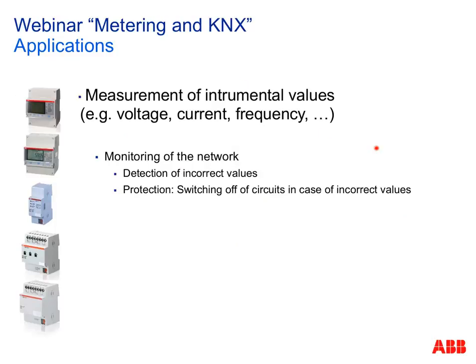When measuring electrical values we also get classical values like voltage, current, and frequency, which can be used for monitoring your power network. You can detect incorrect values — for example if voltage drops, which could be dangerous for some loads. You can react by getting an alarm and switching off circuits that might be harmed.